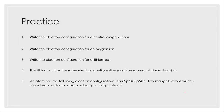Let's look at some practice problems. Let's write the electron configuration for a neutral oxygen atom. Oxygen is element number eight. The electron configuration is 1s2, 2s2, 2p4.